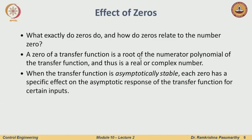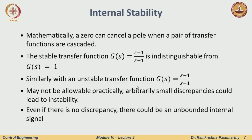A zero of a transfer function is the root of the numerator polynomial; it can be a real or complex number, or simply the number zero. When the transfer function is asymptotically stable — meaning all poles are in the left half plane — each zero has a specific effect on the asymptotic response of the transfer function for certain inputs. This is what we will explore throughout this lecture.